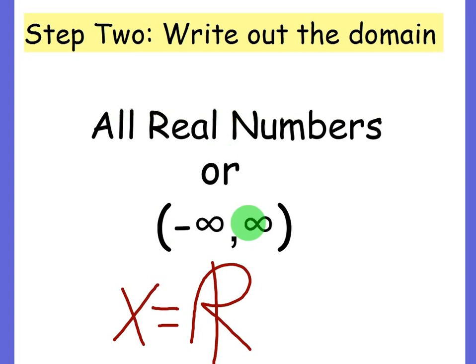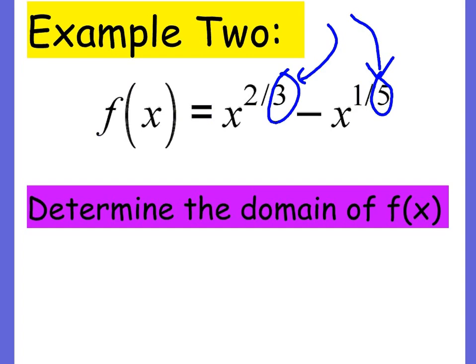You can write from negative infinity to infinity or you can use the all real numbers sign. And since it's domain, you write x equals. Okay, next example. Is this an odd root function? Well, let's take a look. The denominator here is three, which is odd. The denominator here is five, which is odd.